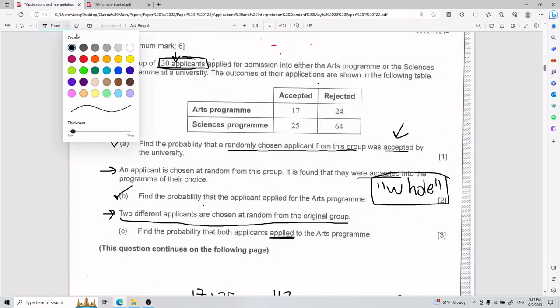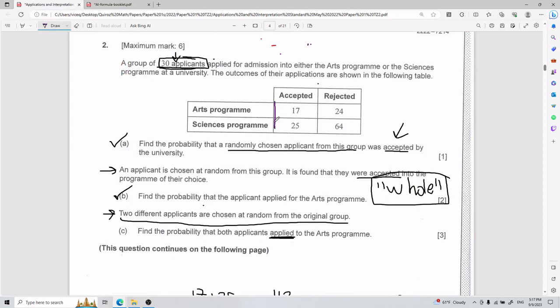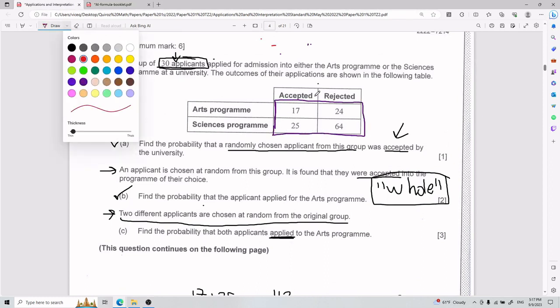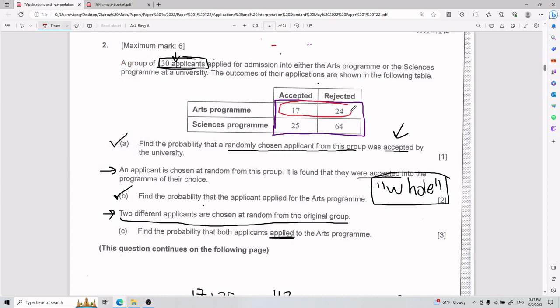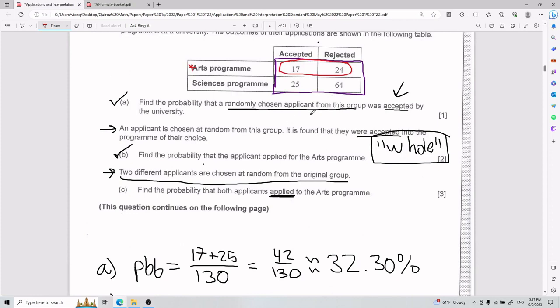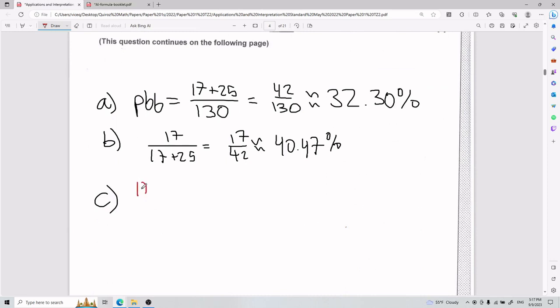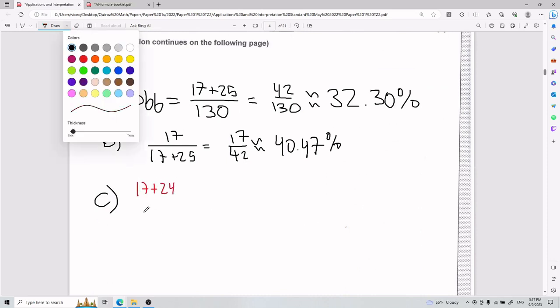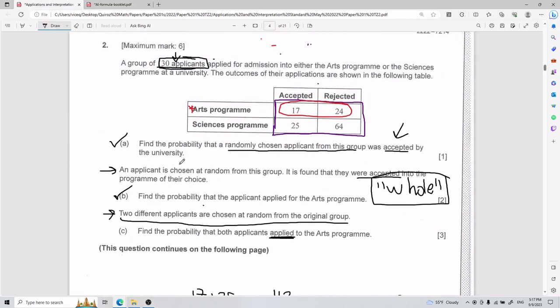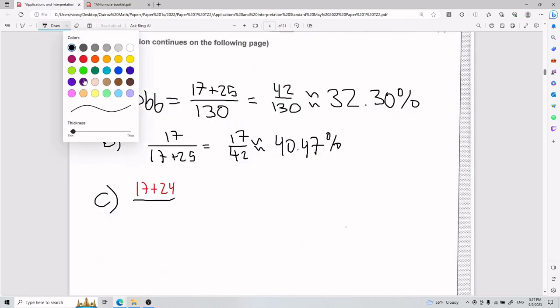The ones that apply, my total, my total is this whole thing. And the ones that are applied are these two, because it's just arts program. So my part is going to be what's in red, and my whole is going to be what's in purple. So for the first guy, we're going to have 17 plus 24 divided by what's in purple, which we know the total is 130.